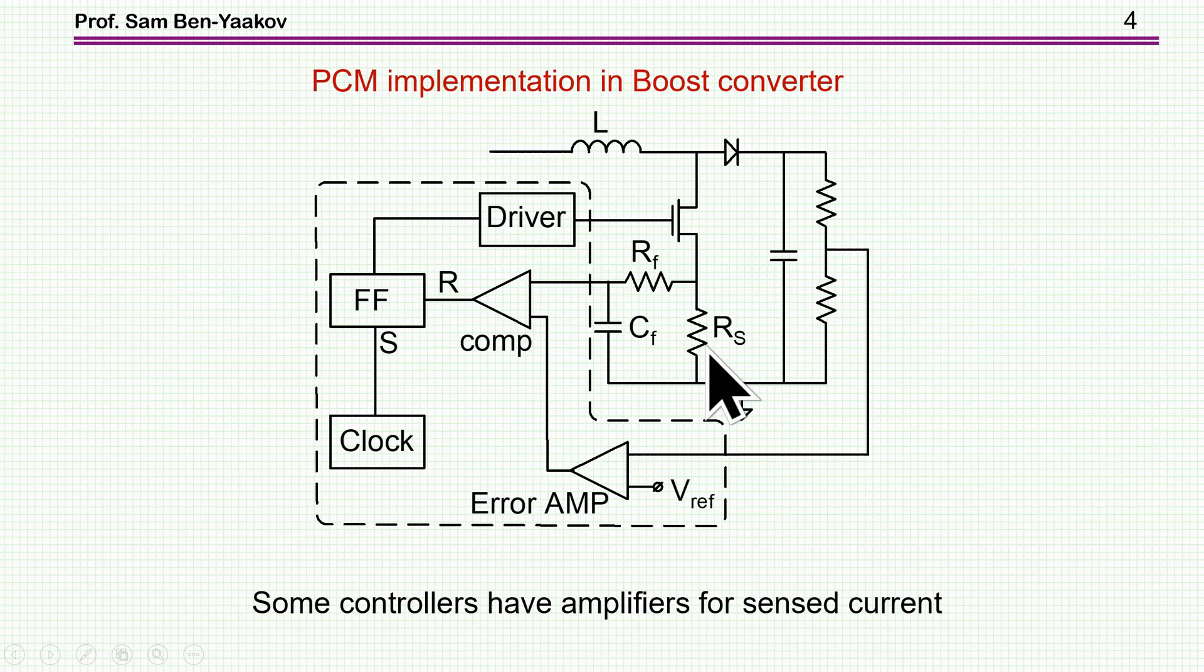Here is an implementation in a boost converter. In this case, we are measuring the current by a sense resistor at the source. There is a filter here to damp the spikes due to the penetration of the spike from the gate to the source via the capacitor, G to S. And then we have the comparator. This is V_E here that I've mentioned earlier. And then this comparator will turn off the flip-flop, will reset it, while the clock again will set the flip-flop.